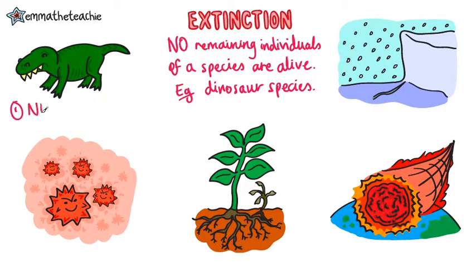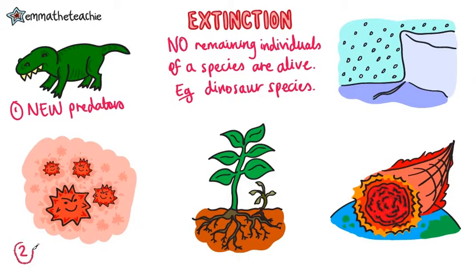First of all is the introduction of new predators. If a new species of predator appears, it can quickly cause extinction of its prey species. This happened when humans introduced predators on the island of the Dodos. Secondly, introducing new diseases can quickly cause extinction if the species has no immunity to it.